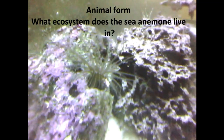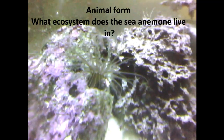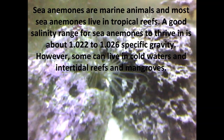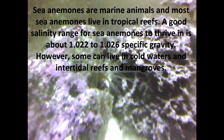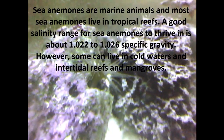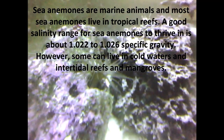Animal form: what ecosystem does the sea anemone live in? Sea anemones are marine animals and most sea anemones live in tropical reefs. A good salinity range for sea anemones to thrive in is about 1.022 to 1.026 specific gravity.